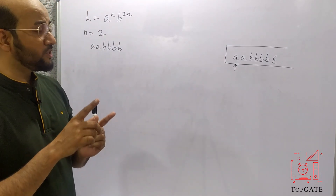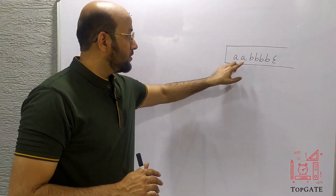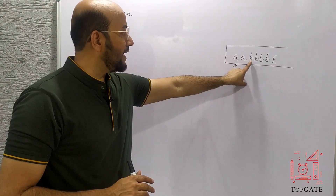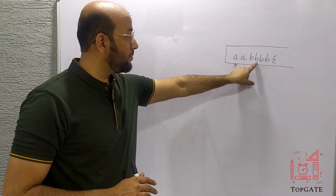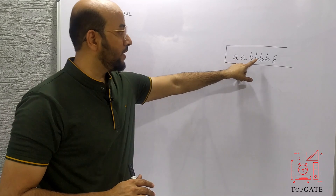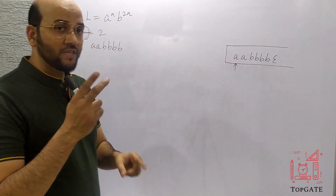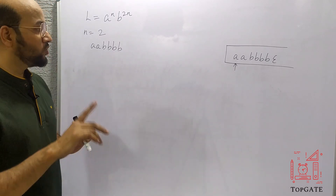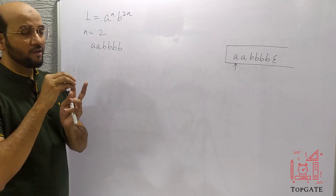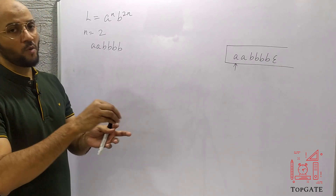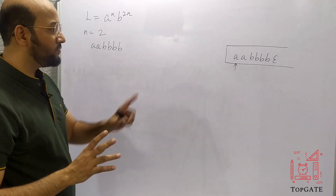Now I know that B appears twice as often as A. So with two A's pushed, when I get the first B I will bypass it — do nothing. For the second B I will pop one A. Third B I bypass, fourth B I pop one more A. So for every two B's I am popping one A. This is the first logic.